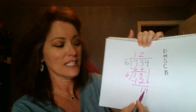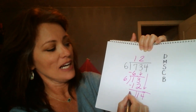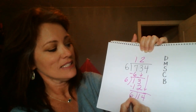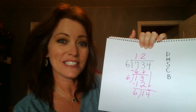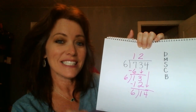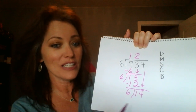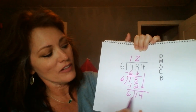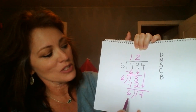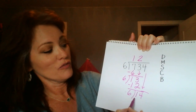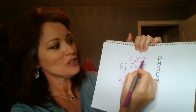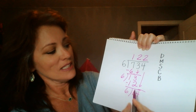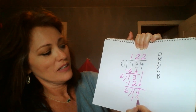Now we're back at D for divide. 14 divided by 6 — we're using the same divisor every time. Think of multiples of 6: 6, 12, 18. You can't go above that number, so we stop at 12. So 14 divided by 6 is 2. 2 times 6 is 12.